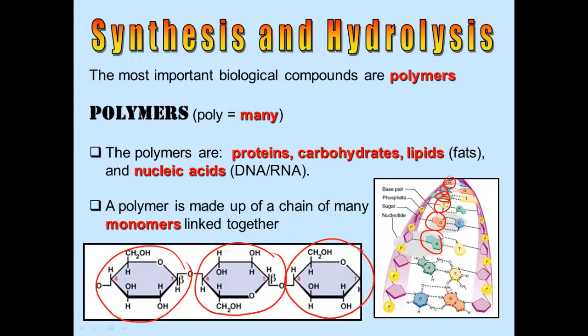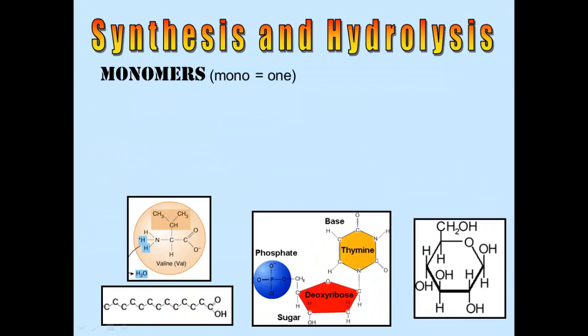A polymer is made up of a chain of a whole bunch of monomers linked together. Monomer means one. So when you have one sugar, or one fat, or one nucleotide, or one amino acid molecule, you're talking about a monomer.